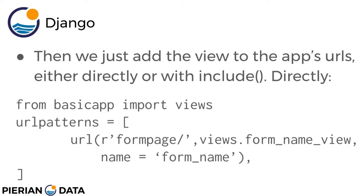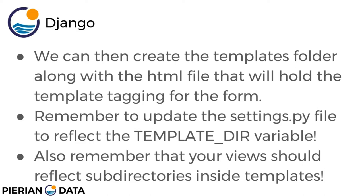Then you add the view to the app's URLs, either directly or with the include function. If you do it directly, you import views from your application and inside your URL patterns you call the url function, passing in the URL extension, the view (in this case views.form_name_view), and a name. Then create the templates folder along with the HTML file that will hold the actual template tagging for the form.